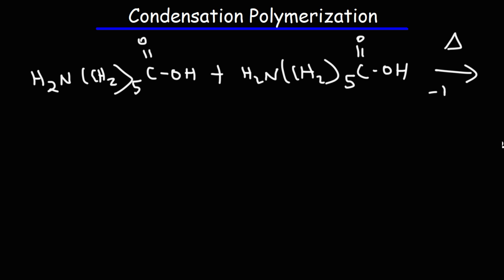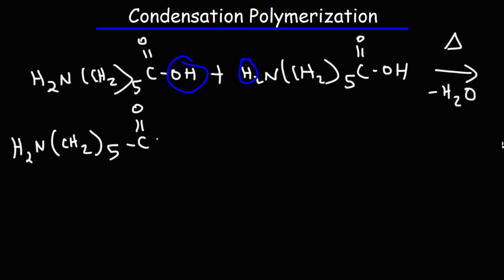We heat up the reaction mixture and lose water in the condensation reaction: we remove the OH from the carboxylic acid and one hydrogen from the NH2 group, just like before, getting an amide connecting these two units together. This is how amino acids combine to form proteins — in an amino acid you have a carboxylic acid and an amino group, so a protein is basically a condensation polymer. Proteins are polyamides when you think about it.